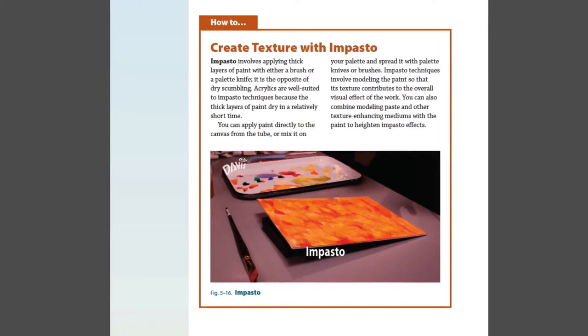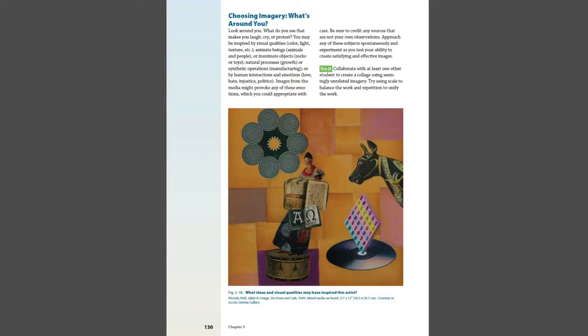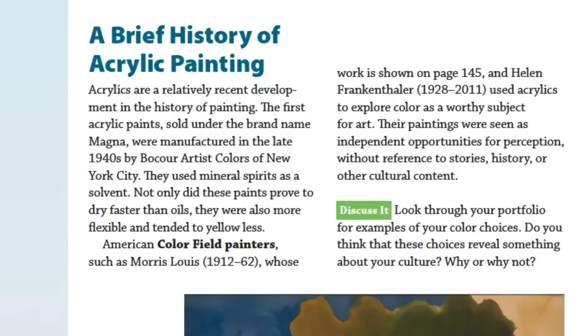Each chapter includes at least one how-to section. Using photos and sequential text, each demonstrates an important skill or technique. At key points throughout the text, students are encouraged to collaborate with others or work on their own to give new techniques or media a try. The highlighted 'Try It' text makes these opportunities easy to find. Highlighted 'Discuss It' text can be used to initiate class discussions or as writing prompts.